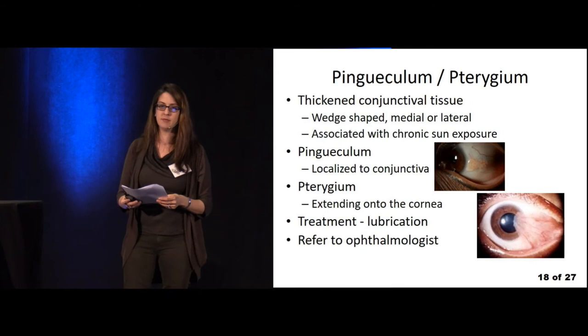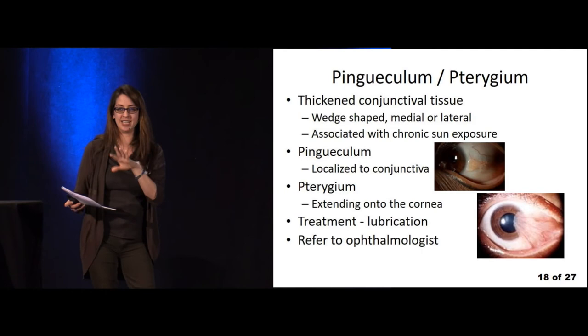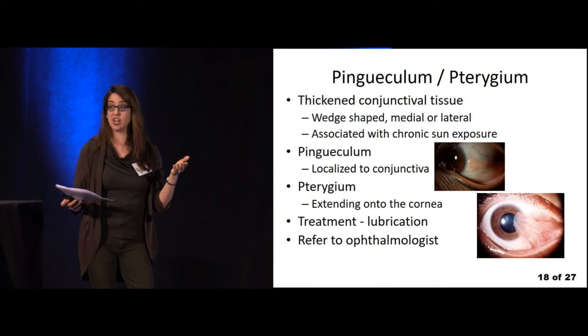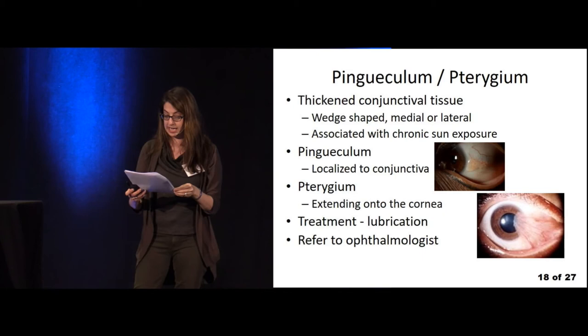Pinguecula and pterygium are thickened connective tissue, wedge-shaped on the eye, medial or lateral, associated with chronic sun exposure. A pinguecula is localized to the conjunctiva; a pterygium extends onto the cornea. Treatment is lubrication and referral to ophthalmology.